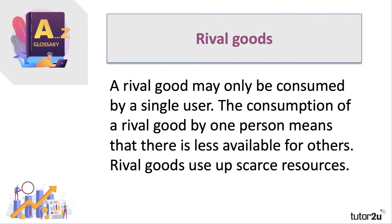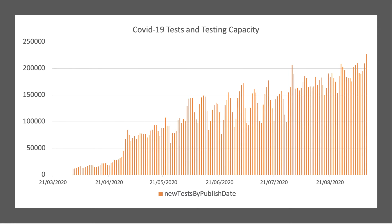One aspect of COVID tests worth mentioning is that a test is a rival good. A rival good may only be consumed by a single user. If I have a test, that means there is one less test available for other people. Rival goods use up scarce resources, and there is therefore an opportunity cost — if I take a test, that reduces the amount available for somebody else.